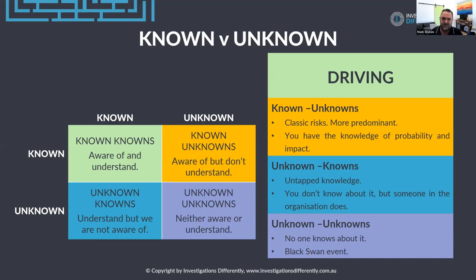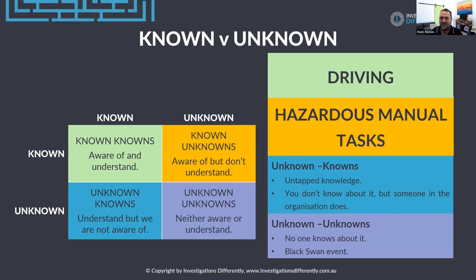Some examples of known knowns: driving, fall from height — we know those. We know there's a certainty about the level of risk for someone falling from height, anywhere from a first aid injury up to a fatality. For known unknowns: hazardous manual tasks. We know we have them in our organisations — people are lifting things, repetitive strain — but we might not fully understand the impact because we're talking about chronic, long-term effects that could take years to show.